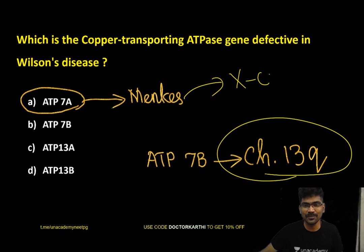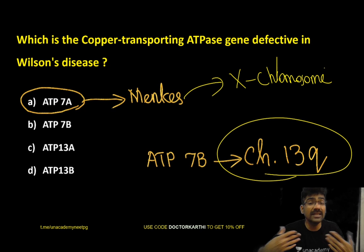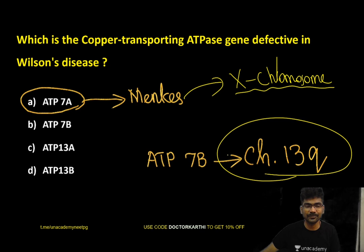ATP7A is located on the X chromosome. Since Menkes is inherited in X-linked recessive manner, the gene is logically on the X chromosome.